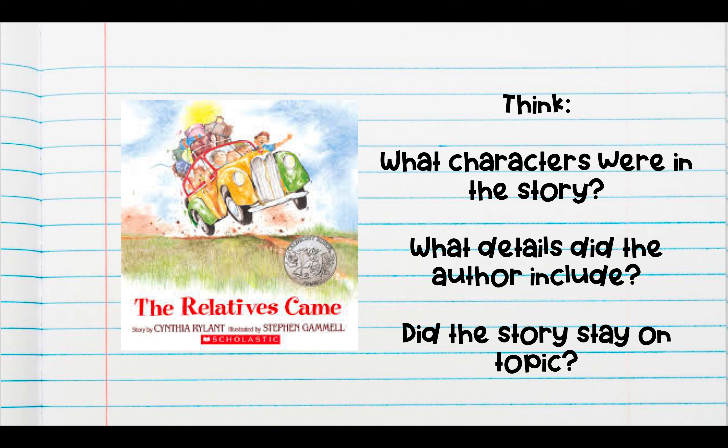Now that we've read the book, The Relatives Came, I want you to think about the story. This was an example of a narrative. What characters were in the story? Was it just one person, or did the writer talk about a bunch of people? What details did the author include? Did they just say they drove in their car and then drove home? No, they talked about all of the fun things that they did. There was a lot of details on eating dinner.